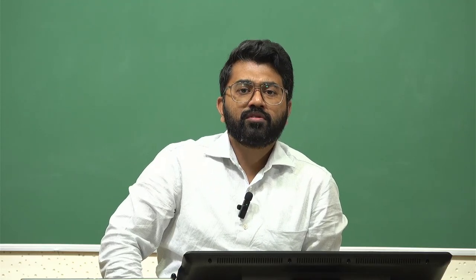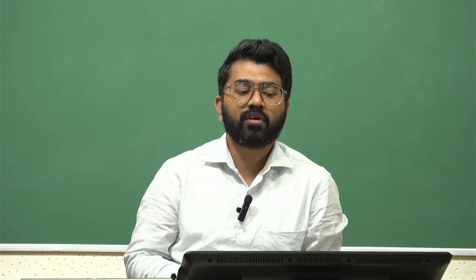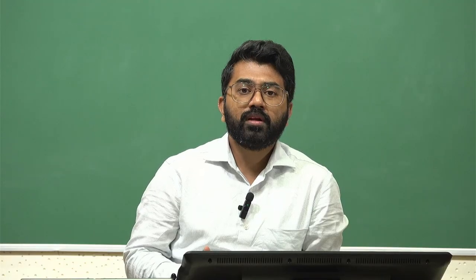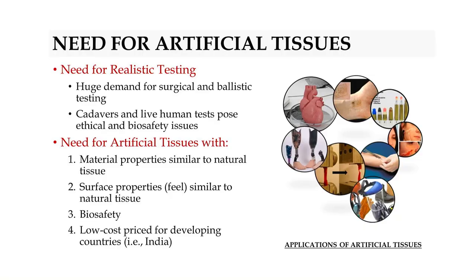Soft Tissue Simulants, also sometimes known as Artificial Tissues, Synthetic Tissues, or Tissue Surrogates — these are some of the common terminologies used. Why do we need such artificial tissues in the first place? One of the key needs is for realistic testing. There is a huge demand not only in the surgical training market but also in ballistic testing and armor testing.